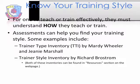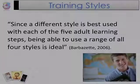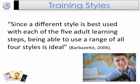One of the most important aspects of training is to know how you train. That information gives great insight on how you should enhance or improve your training to meet the needs of all learners. There are a variety of assessments available on the internet, and some samples are provided in the resources section. Bartizet says that since a different style is best used with each of the five adult learning sets, being able to use a range of all four styles is ideal. It is important to adopt and find flexibility in training, hence using all four styles.